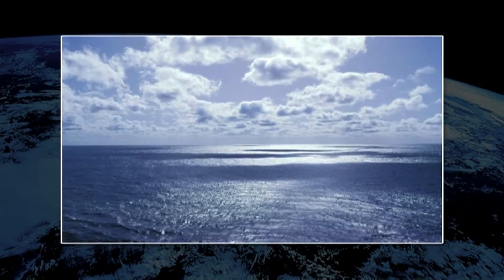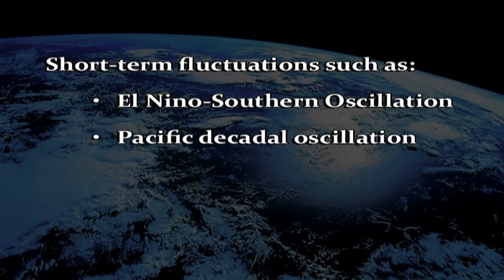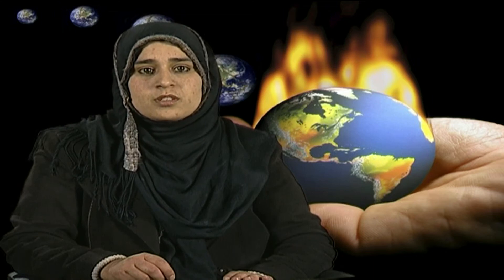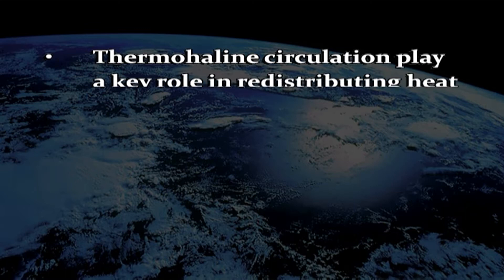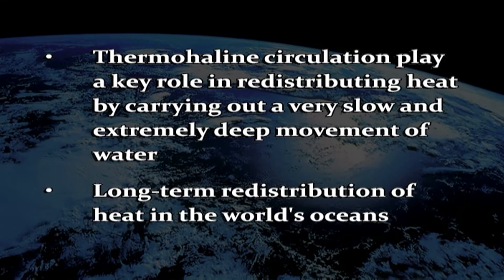The ocean is a fundamental part of the climate system. Some changes in it are occurring at longer time scales than in the atmosphere, massing hundreds of times more and having very high thermal inertia. Short-term fluctuations such as the El Niño-Southern Oscillation, the Pacific Decadal Oscillation, the North Atlantic Oscillation and the Arctic Oscillation represent climate variability rather than climate change. On longer time scales, alterations to oceanic processes such as thermohaline circulation play a key role in redistributing heat by carrying out a very slow and extremely deep movement of water and the long-term redistribution of heat in the world's oceans.